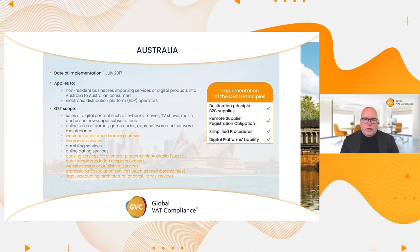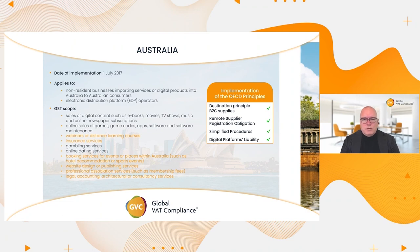How has Australia done it? They apply the destination principle. They make non-resident suppliers taxable and have introduced a simplified procedure — where normally in Australia you register for an ABN number — these simplified procedures give you an Australian Reference Number, or ARN, and via a simplified portal you can remit the GST and make payments to a bank in Australia. Payments are made in Australian dollars and platforms, or EDPs, are also liable. You can see that Australia, as an early adopter, completely respected the OECD principles.